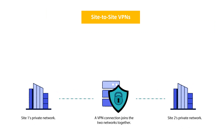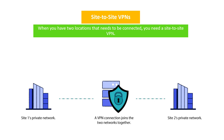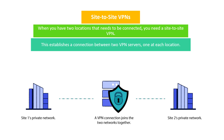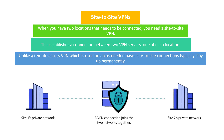Next, site-to-site VPNs. When you have two office locations that need to be connected, you need a site-to-site VPN. This establishes a connection between two VPN servers, one at each location. Unlike remote access VPN which is used on a needed basis, this site-to-site connection typically stays up permanently. In remote access VPN the tunnel is established when needed, but in site-to-site VPN the tunnel stays permanently, joining the two networks.